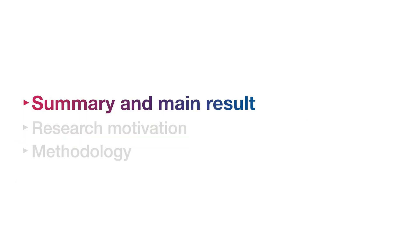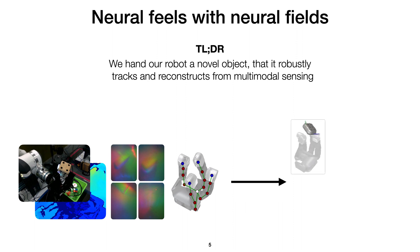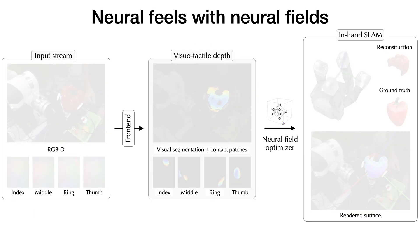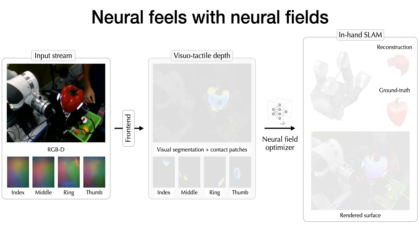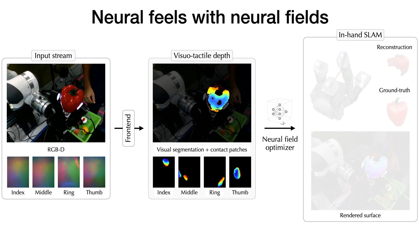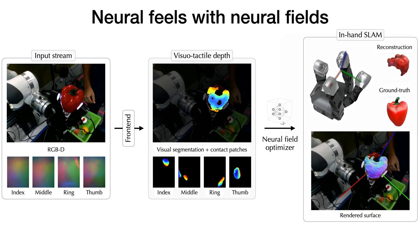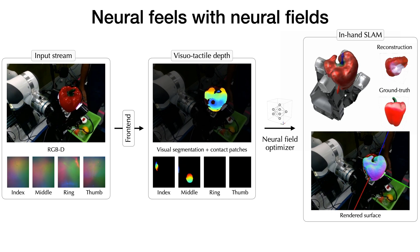Let's take a sneak peek at the task and some salient results. We have the robot in a known object, attempting to both reconstruct and robustly track it with multimodal sensing. We visualize the input visual tactile stream of RGB depth and touch images on the left, the segmented depth measurements in the middle, and the online rendered surface along with the reconstructions from marching cubes on the right. We hand the robot this bell pepper object and visualize the gradual reconstruction and robust tracking of it.